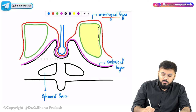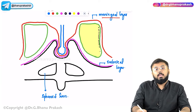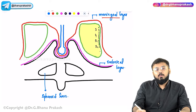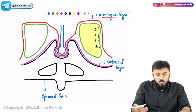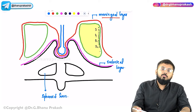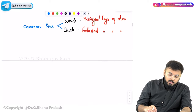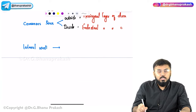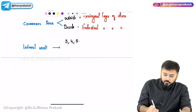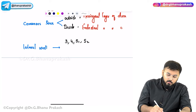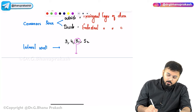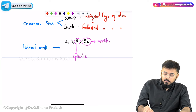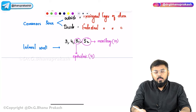On the lateral wall of the cavernous sinus you find: cranial nerve III (oculomotor), cranial nerve IV (trochlear), V1 (ophthalmic branch of trigeminal), and V2 (maxillary branch of trigeminal). Within the cavernous sinus itself runs the internal carotid artery, surrounded by the T1 sympathetic plexus.